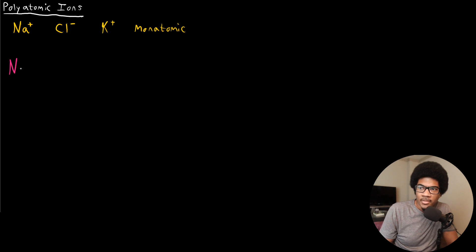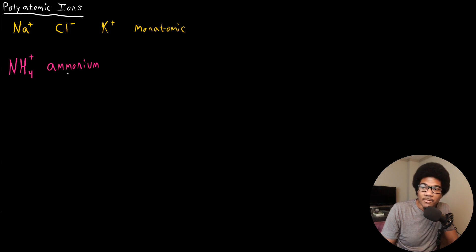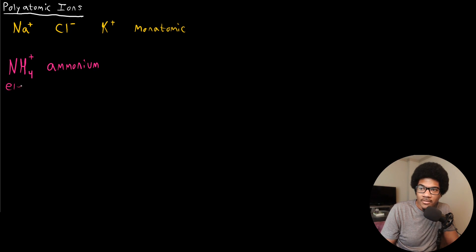A common polyatomic ion is NH4+, and this has the name ammonium. All of these ions have common names assigned to them — we'll talk more about this in the next video on naming compounds. These have common names you'll just have to be familiar with. The ammonium ion has a plus one charge.